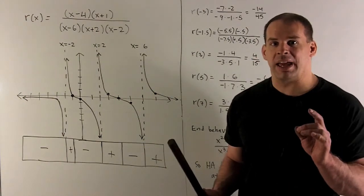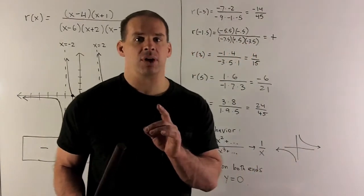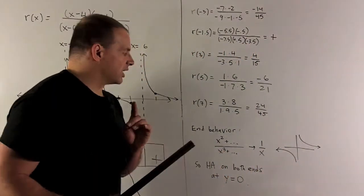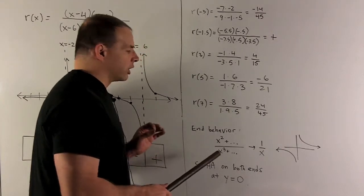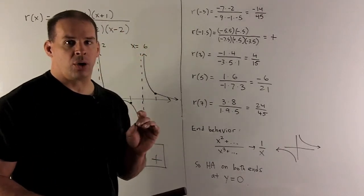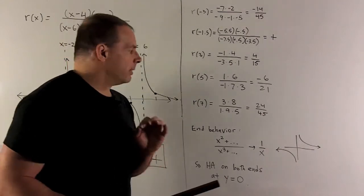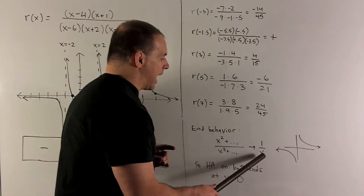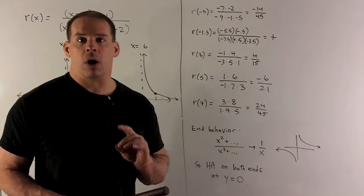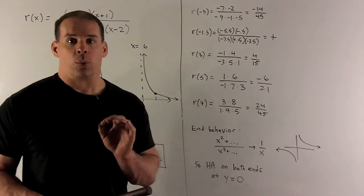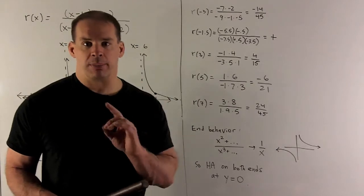So we plot those points. Now we just need the end behavior and then I can connect the dots. For the end behavior, I'm just going to consider our function. I only consider the leading terms. So I'm really considering what's the behavior of x squared over x cubed as I go out to plus or minus infinity. That's going to look like 1/x. And as I go out to plus or minus infinity, 1/x goes to 0 on both sides. So we're going to have a horizontal asymptote at y equals 0 on both ends of my function.